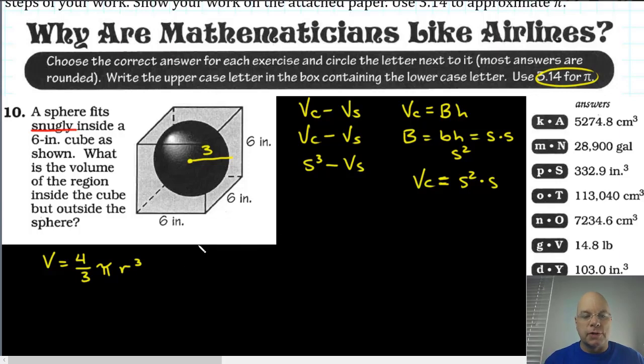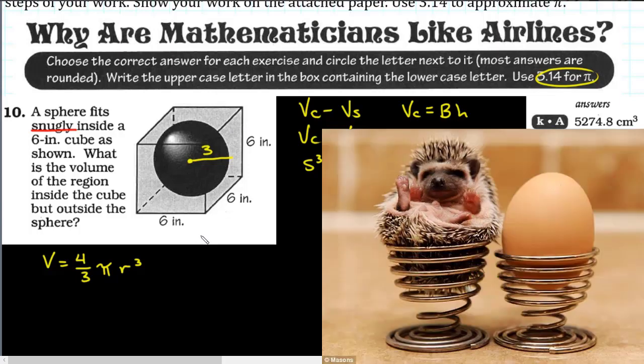And so you substitute that radius into this formula using 3.14 for pi as your estimate for pi. And then once you've substituted the values, it's fine to use a calculator. And then we'll substitute that into this subtraction and find the volume in the cube but outside of the sphere. So do that during the pause and come back and see how you did.